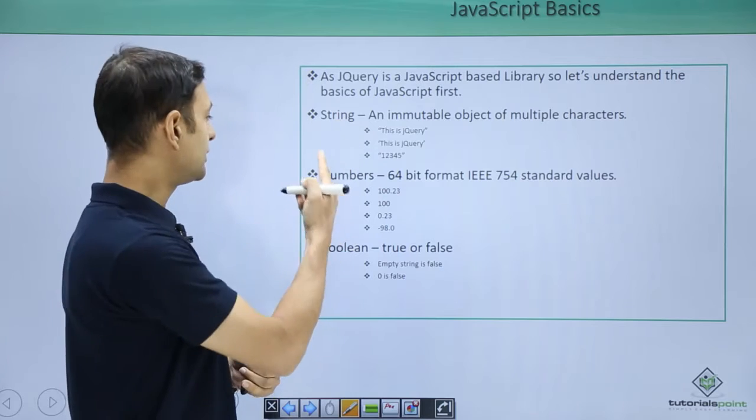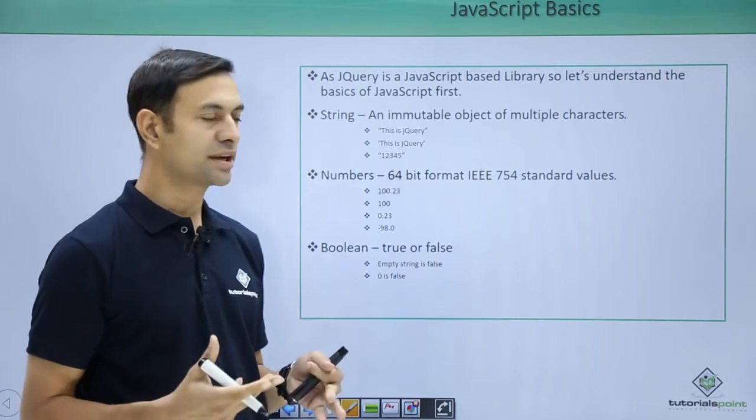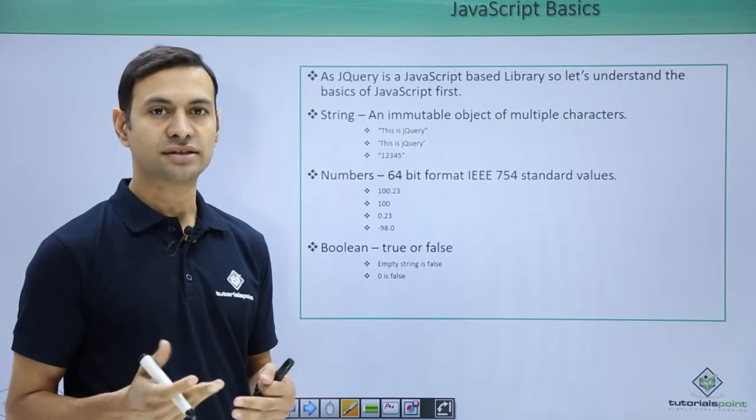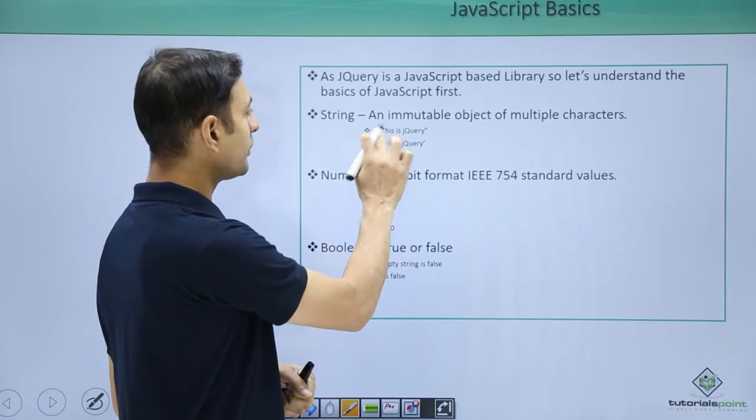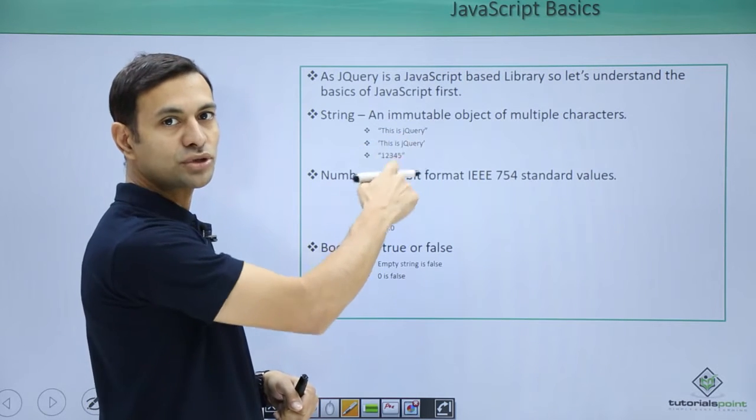one is string, another is numbers, and boolean. String is an immutable object of multiple characters. Here we can see this is jQuery, it is enclosed by double quotes. This is jQuery, it is enclosed by single quotes. Both are strings.